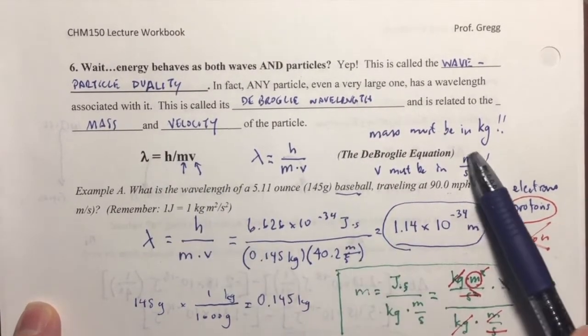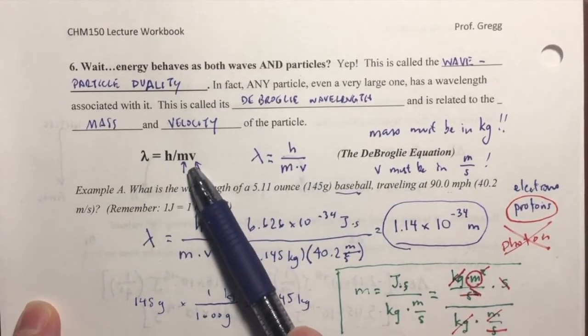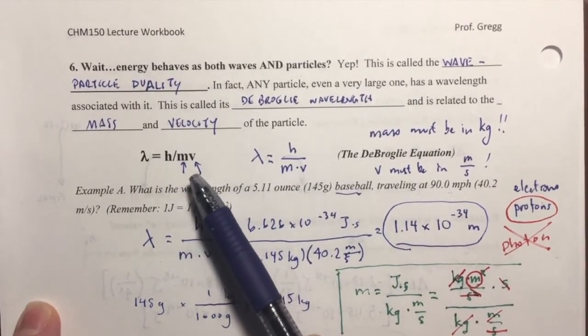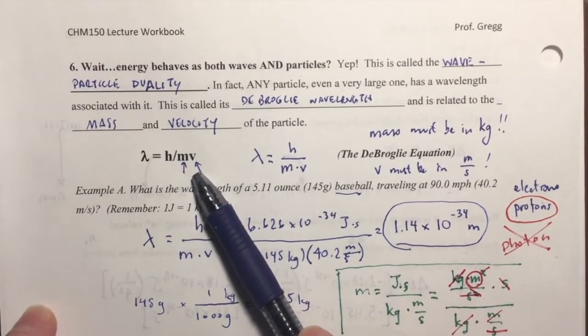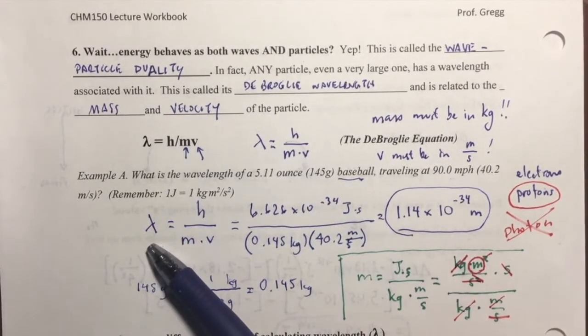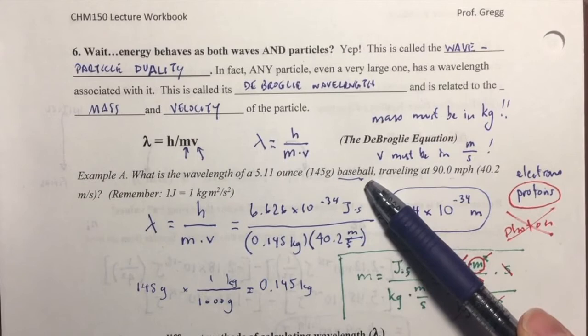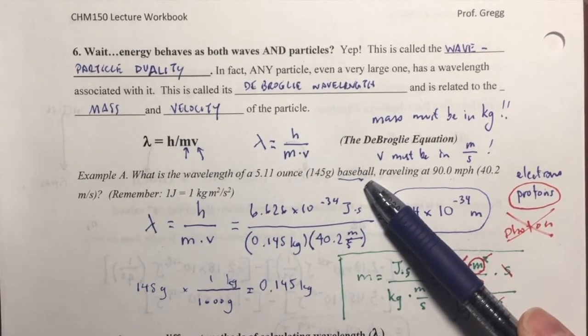So, the de Broglie equation allows us to consider the wave-particle duality of subatomic particles, and we then were able to use that equation to calculate the wavelength of a particle. In that case, the particle was a baseball, and as I mentioned...